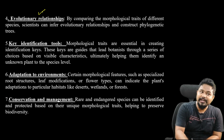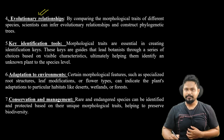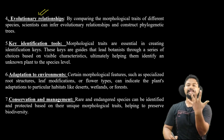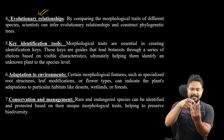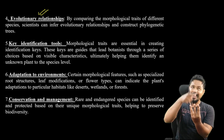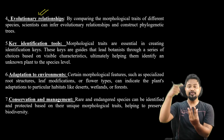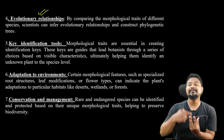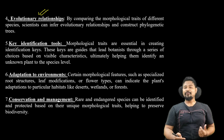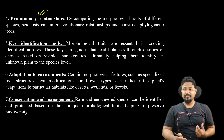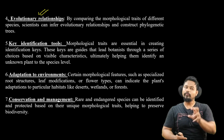Next is determining evolutionary relationships. By studying morphology, we can determine how plants are evolutionarily related — for example, whether they are related to the Magnoliaceae family or the Cucurbitaceae family. Evolutionary relationships are based on morphological features.